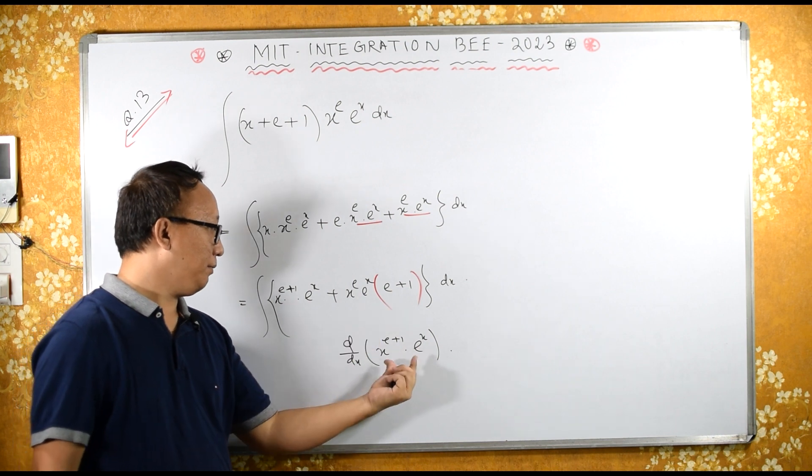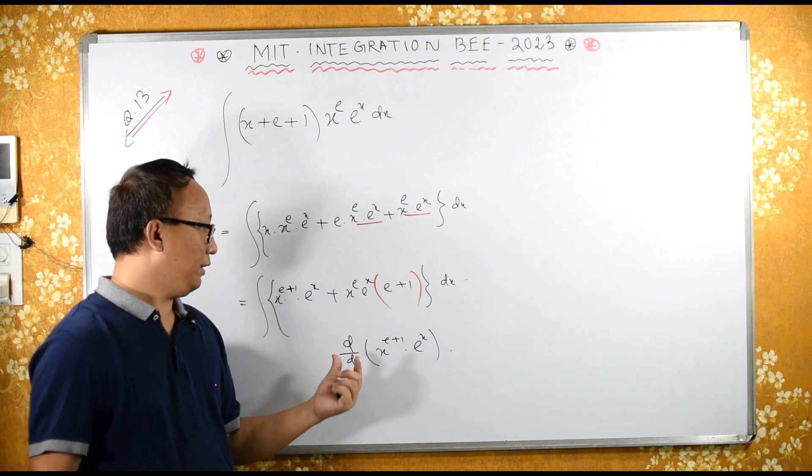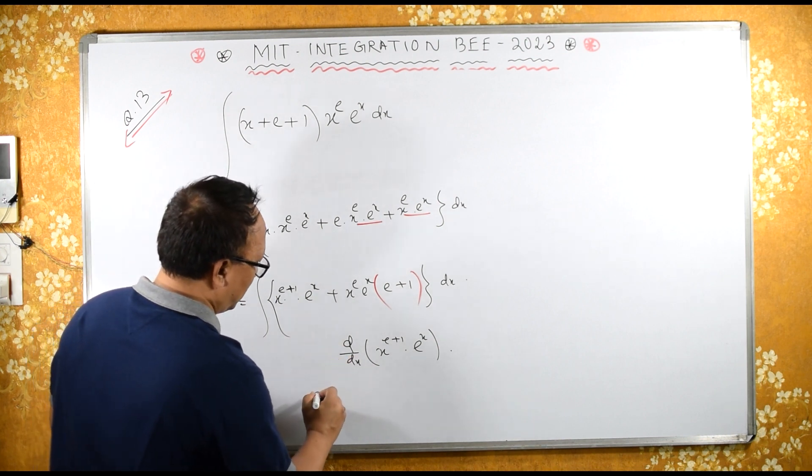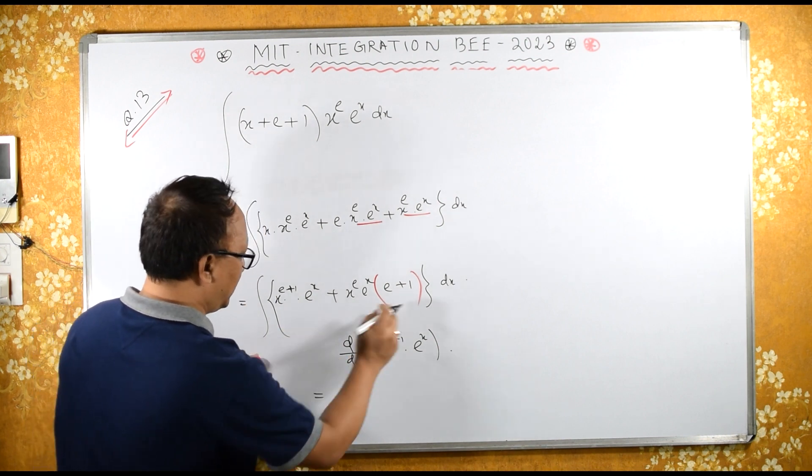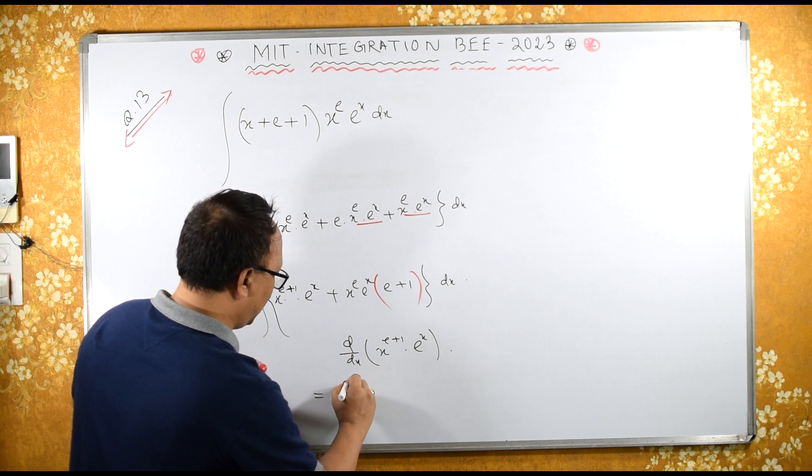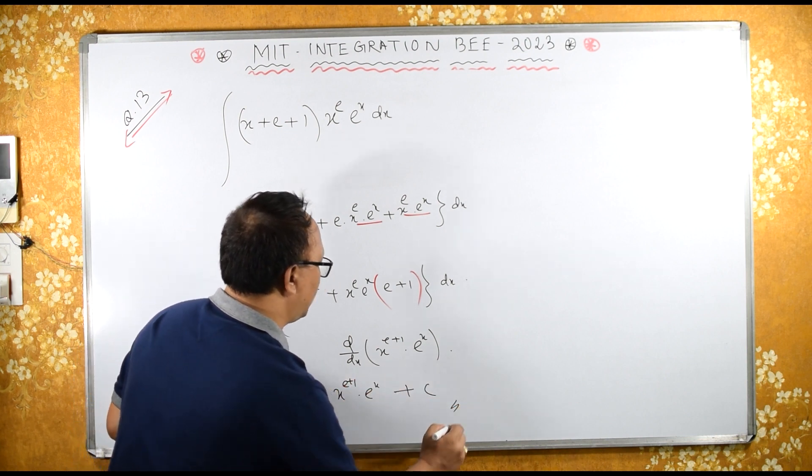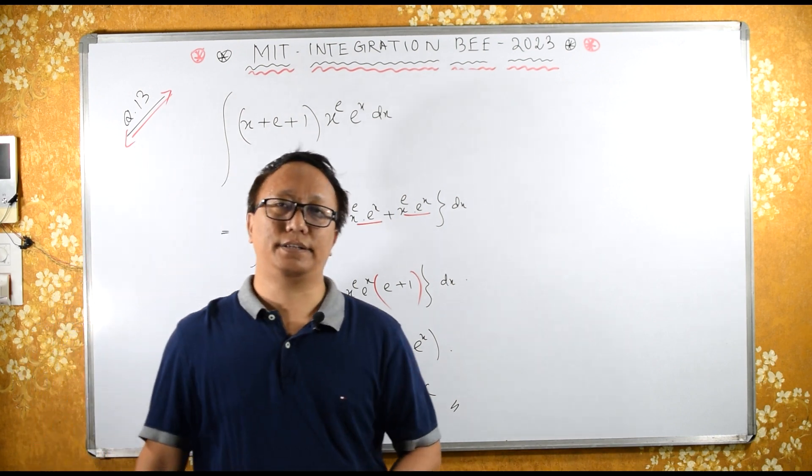Therefore, differentiation of this is same as this. Therefore, integration and differentiation gets cancelled. So this integration becomes x raise to e plus 1 into e raise to x plus c. This is the required answer.